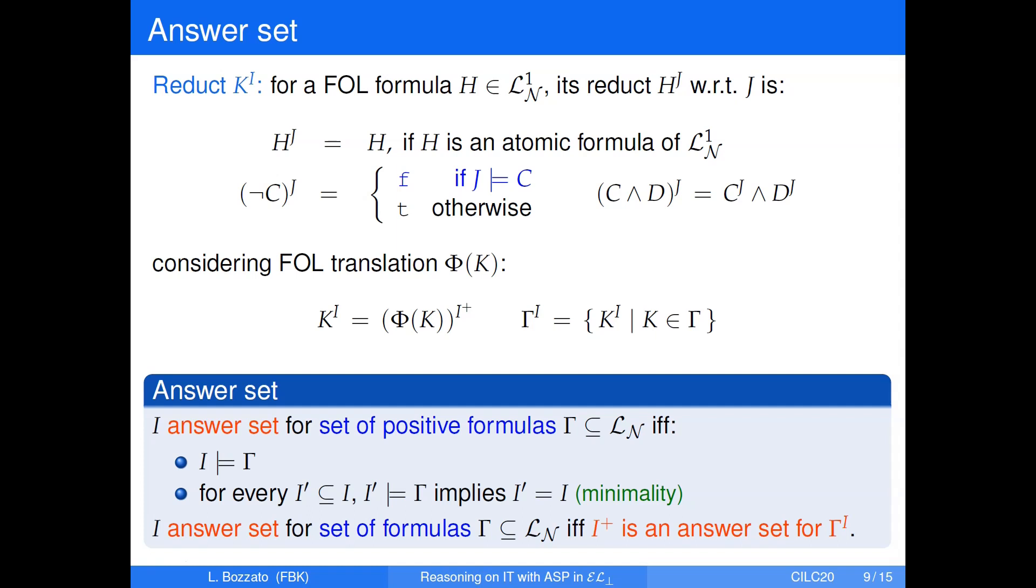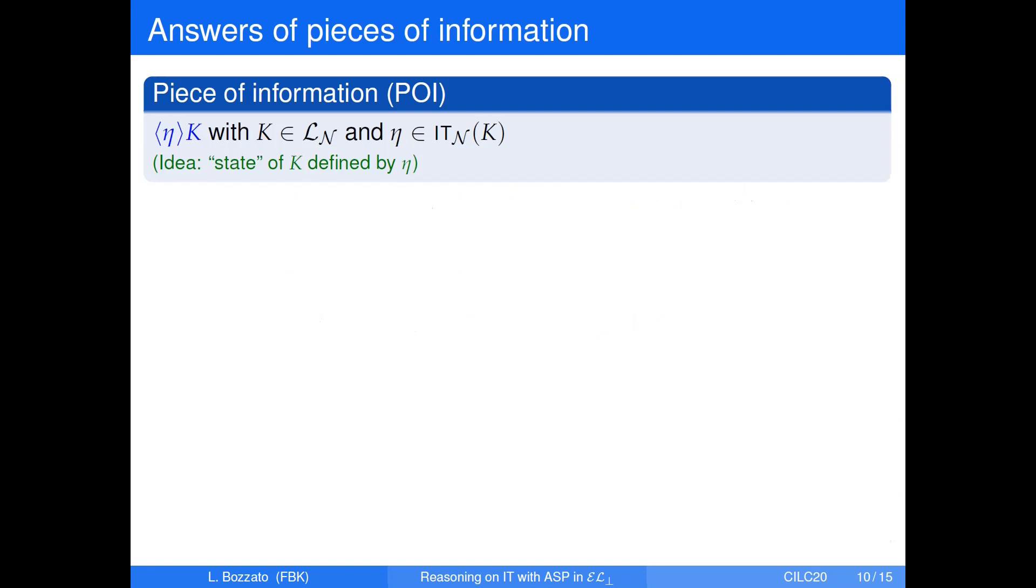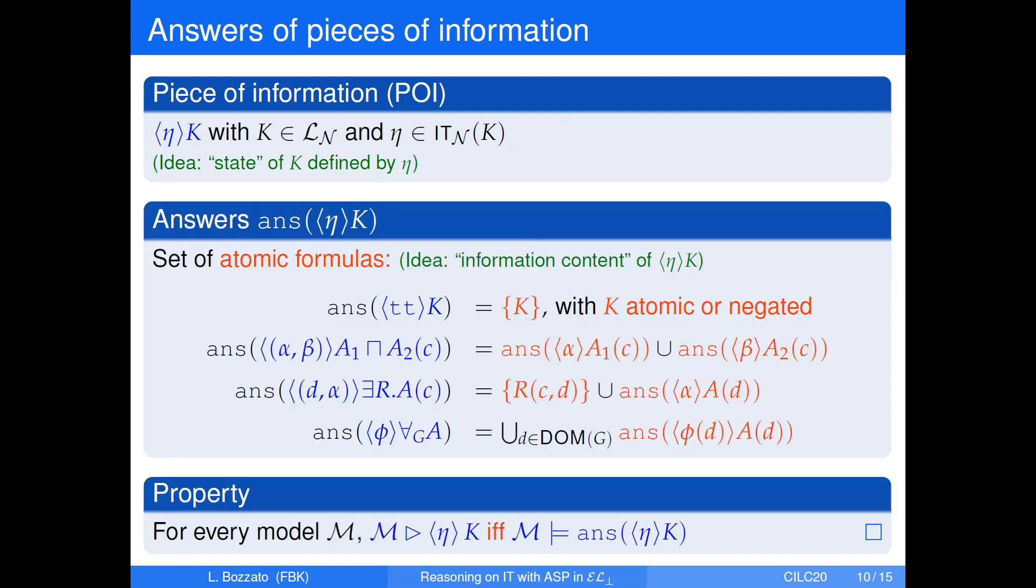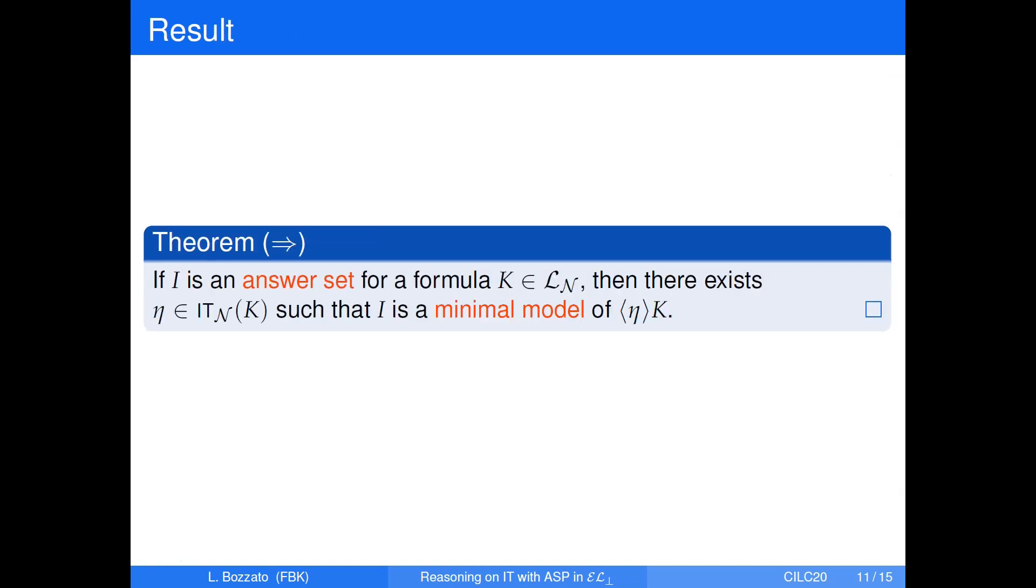In order to deal with negative information, we introduce a notion of reduct. Basically, the reduct operation on a formula substitutes to true and false atoms the negative subformulas on the base of their validity in an LP interpretation. Then, an answer set of EL bottom is defined as a minimal model of the reduct of its subformulas. From the side of information terms, we can define a similar notion. We consider pieces of information that are formulas paired with one of their information terms.